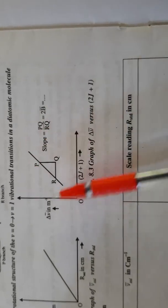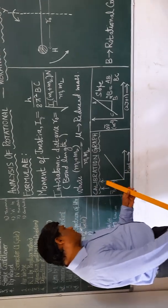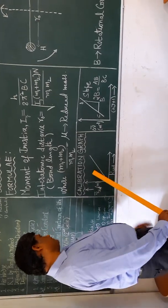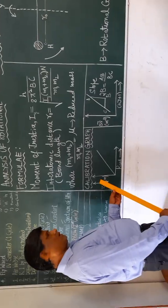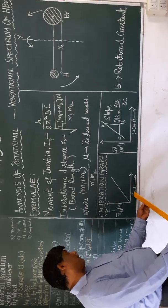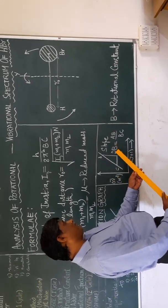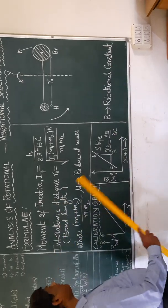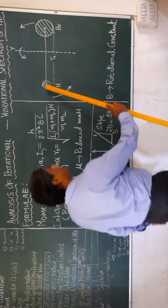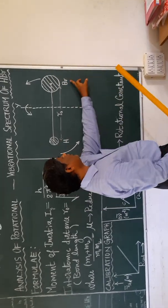The slope value from the graph is 2B, where B is called the rotational constant. The first graph is the calibration graph (wave number versus scale reading), and the second graph plots 2J+1 versus delta nu, giving us the slope equal to 2B, and therefore the value of B. The main aim is to figure out the bond length — that is, the bond length between the hydrogen and bromine atoms.